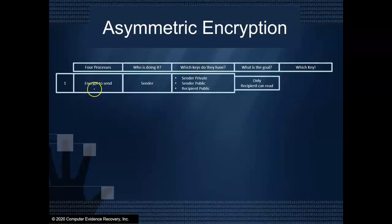First of all, we want to look at when we want to encrypt data to send it. So who's doing this? Well, the sender's doing it. Which keys do they have? Remember, asymmetric encryption, public key, private key. So the sender obviously has a sender's private key and a sender's public key, but they also have the recipient's public key because everybody's got that because it's public. What is the goal?